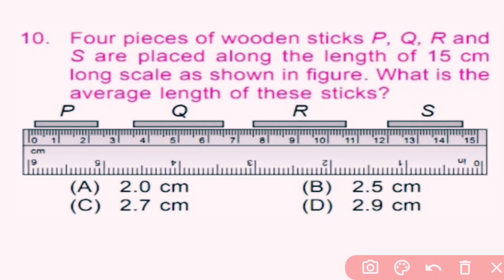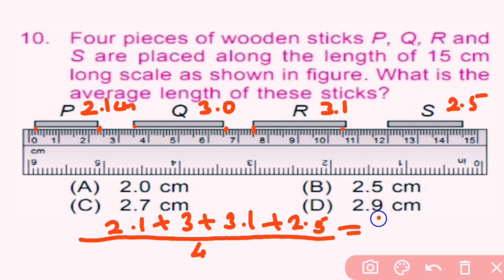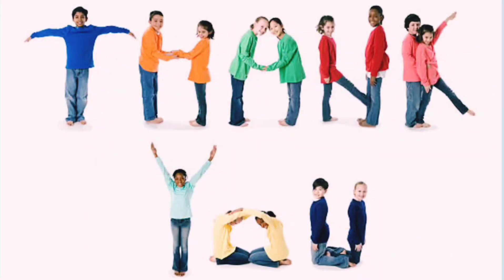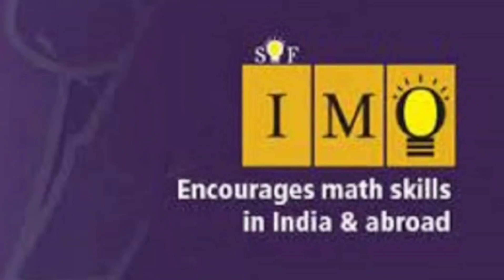Question number 10: Four pieces of wooden stakes P, Q, R and S are placed along a 15-centimeter-long scale as shown in the figure. The length of P is 2.3 minus 0.2 equals 2.1 cm; Q is 3.0 cm; R is 3.1 cm; S is 2.5 cm. The average length is the sum of all lengths divided by 4, which equals 10.7 divided by 4 giving 2.675 centimeter, approximately 2.7 centimeter. So C is the correct answer. Thank you for watching, I hope you liked the video. Do practice well and please don't forget to subscribe to my channel.